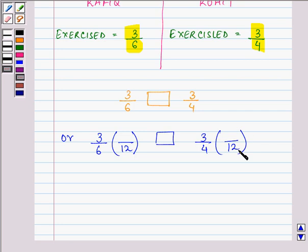What we need to do is multiply the denominator by 2. Then 6 multiplied by 2 will be 12, and hence we will be multiplying the numerator also by 2, which will make it 6 by 12.